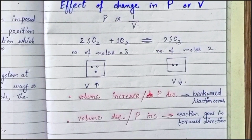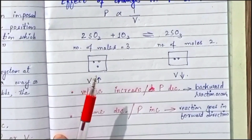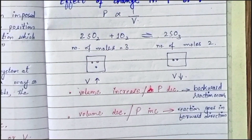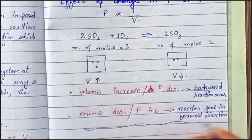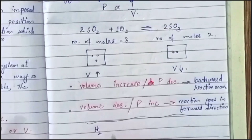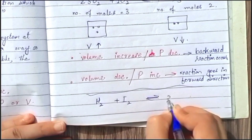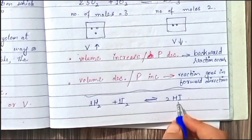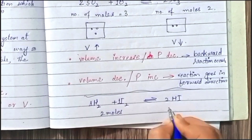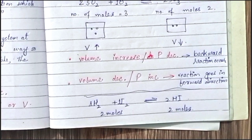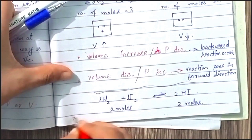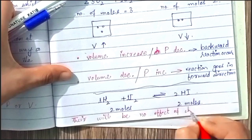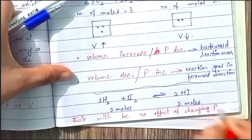Increasing or decreasing pressure disturbs the equilibrium position. However, remember that pressure and volume effects only apply to reactions where the number of moles of reactants and products is different. For example, in the reaction of hydrogen with iodine to form 2 moles of hydrogen iodide, both sides have 2 moles total, so there is no effect of changing pressure or volume on this equilibrium.